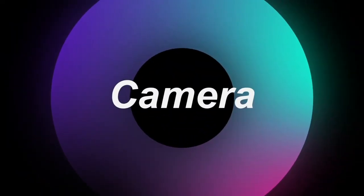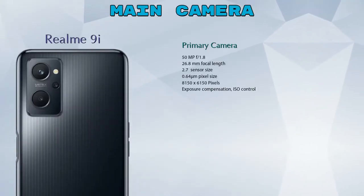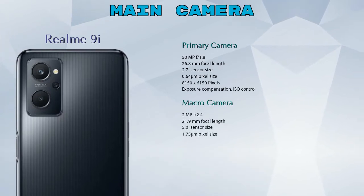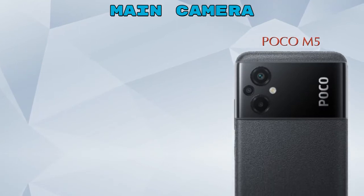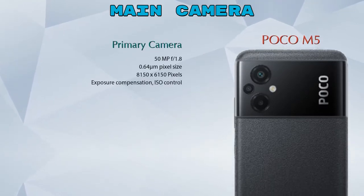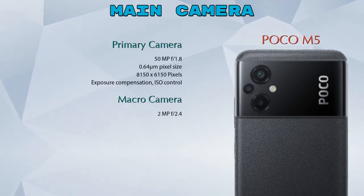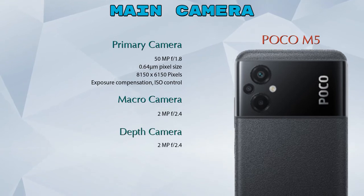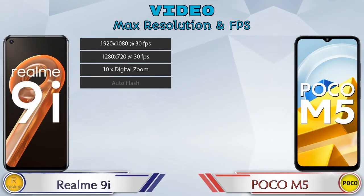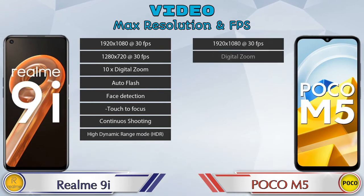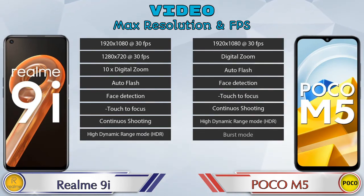Let's see the detail about our favorite feature — camera. First, the rear camera. Realme 9i has three cameras: a primary camera, a macro camera, and a depth camera. Poco M5 also has three cameras: a primary camera, a macro camera, and a depth camera. If we talk about video camera, both phones have eight different types of features available.